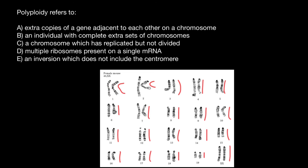If you have only one set, then it's going to be a gamete of a diploid organism. If we have two sets, this is going to be diploid — two sets of chromosomes. And if we have three sets, then this is going to be triploid.